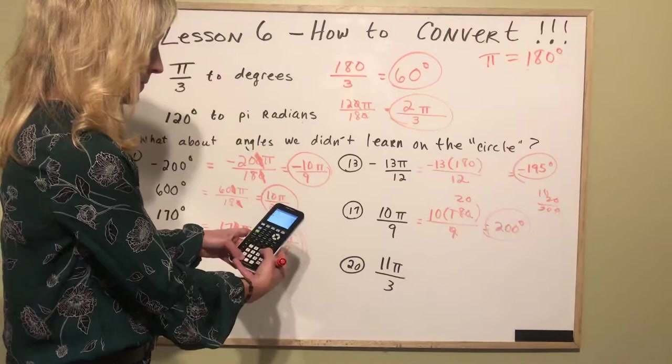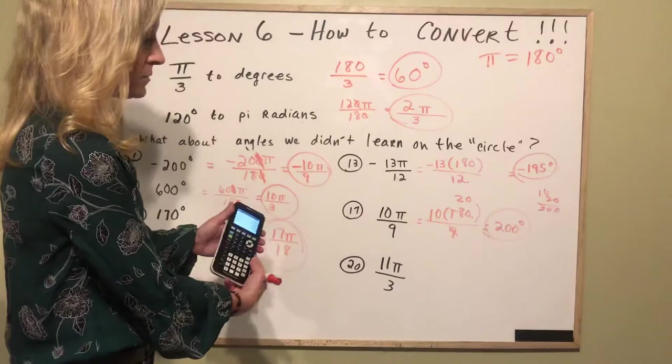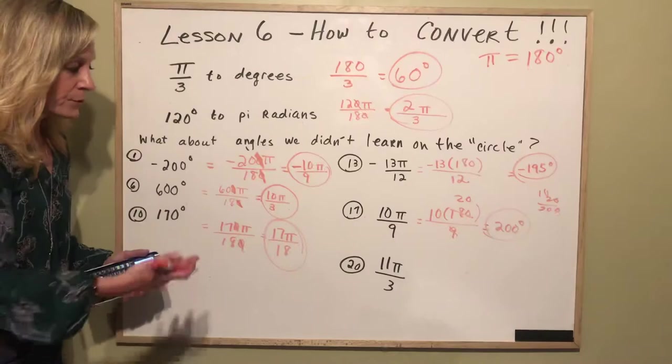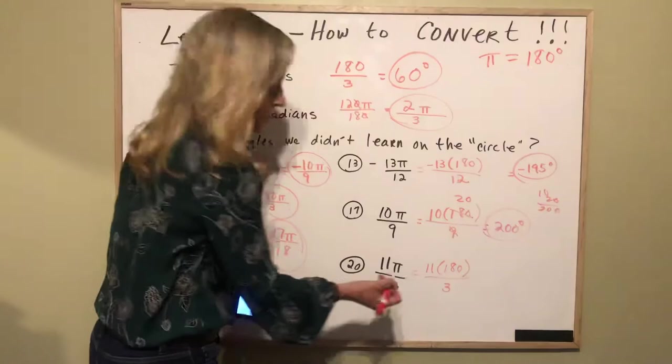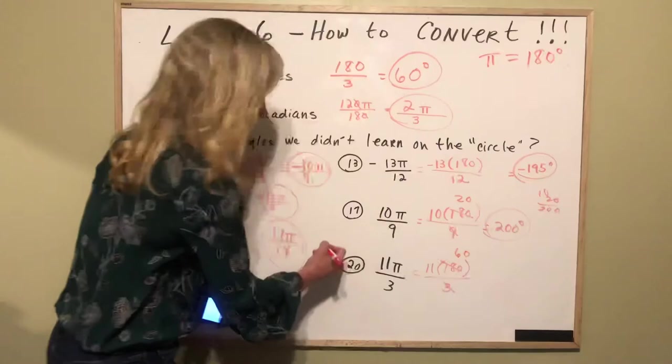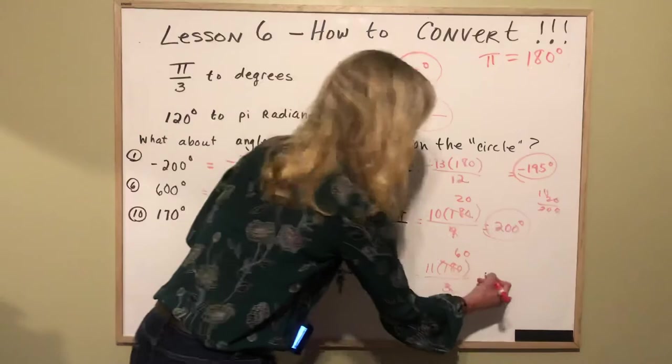And you could have done that with your calculator, 10 times 180 divided by 9 and got your 200 degrees and that one's positive. And finally number 20 I chose for you. Substitute 180 in for pi. 11 times 180 divided by 3. 3 goes into 180, that's 60 times. So 11 times 60. You're going to get 660 degrees.